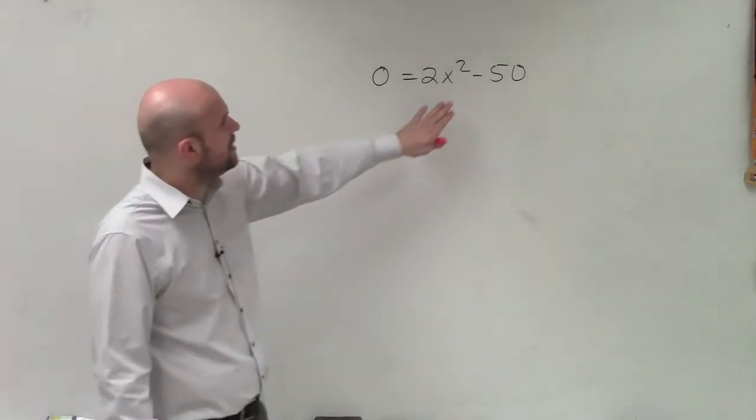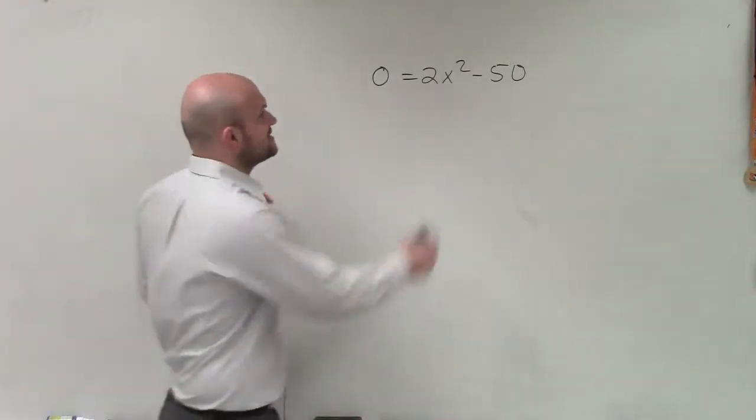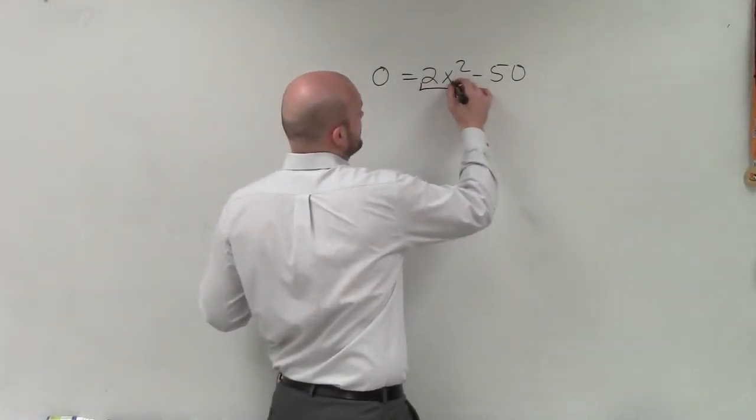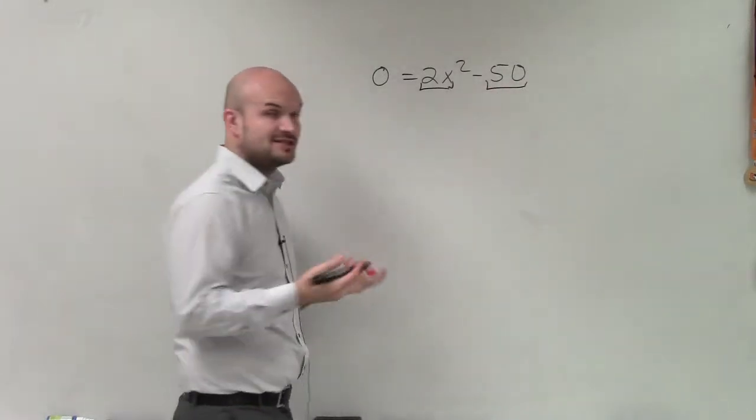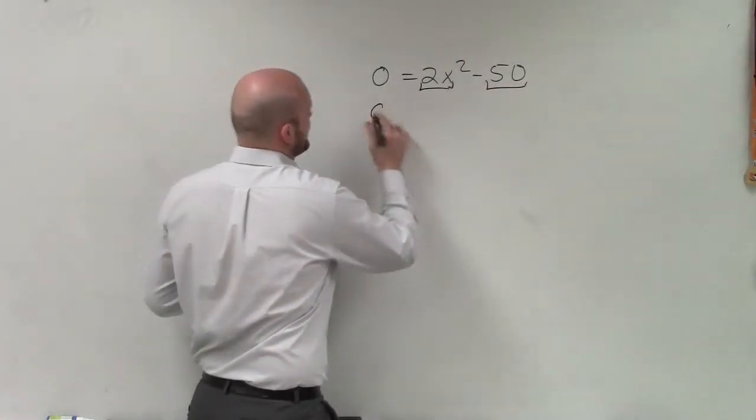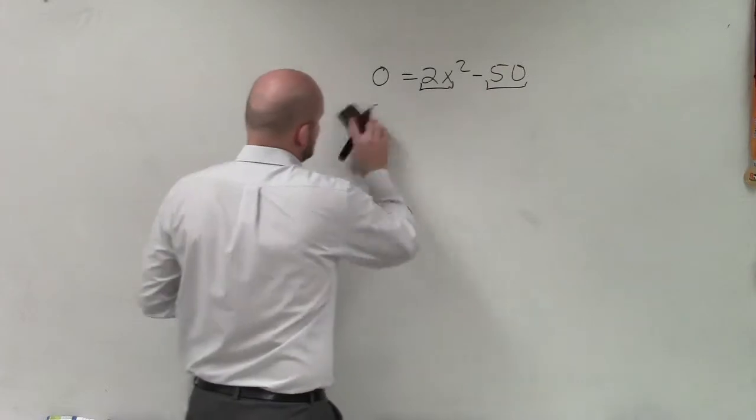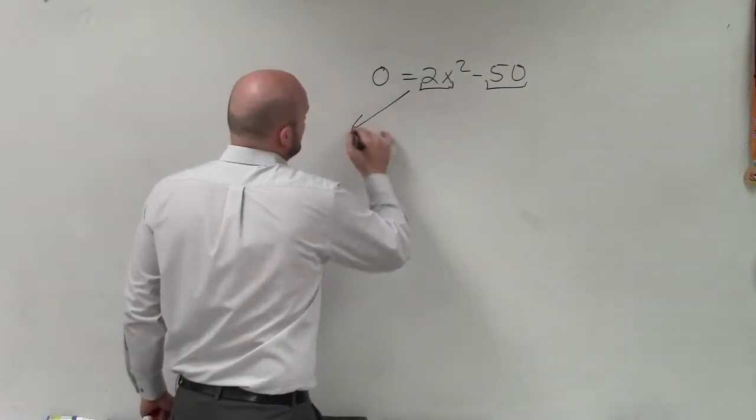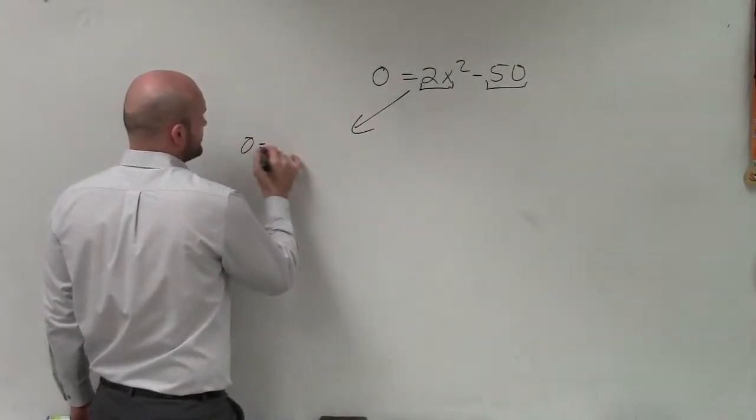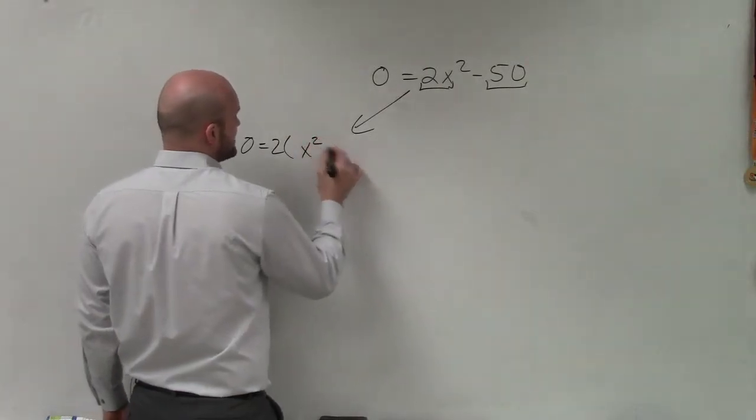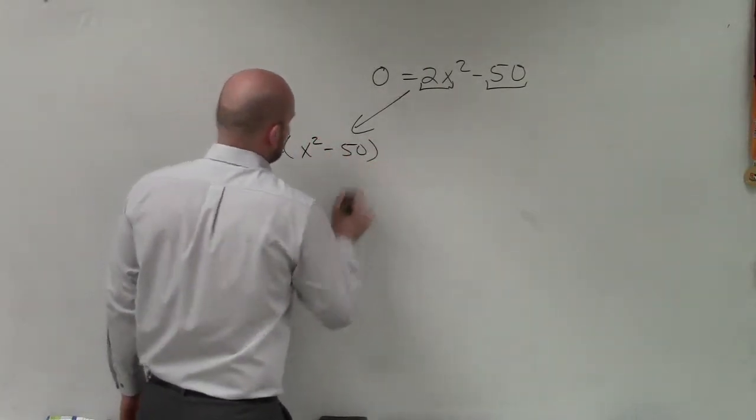So now the next thing that we need to do, if I look at this, I can see out of these two terms, they share a 2. So what I'm going to do here is I'm actually going to do this two different ways for you guys. The first way is I can factor out a 2. And if I factor out a 2, I'm left with x squared minus 25.